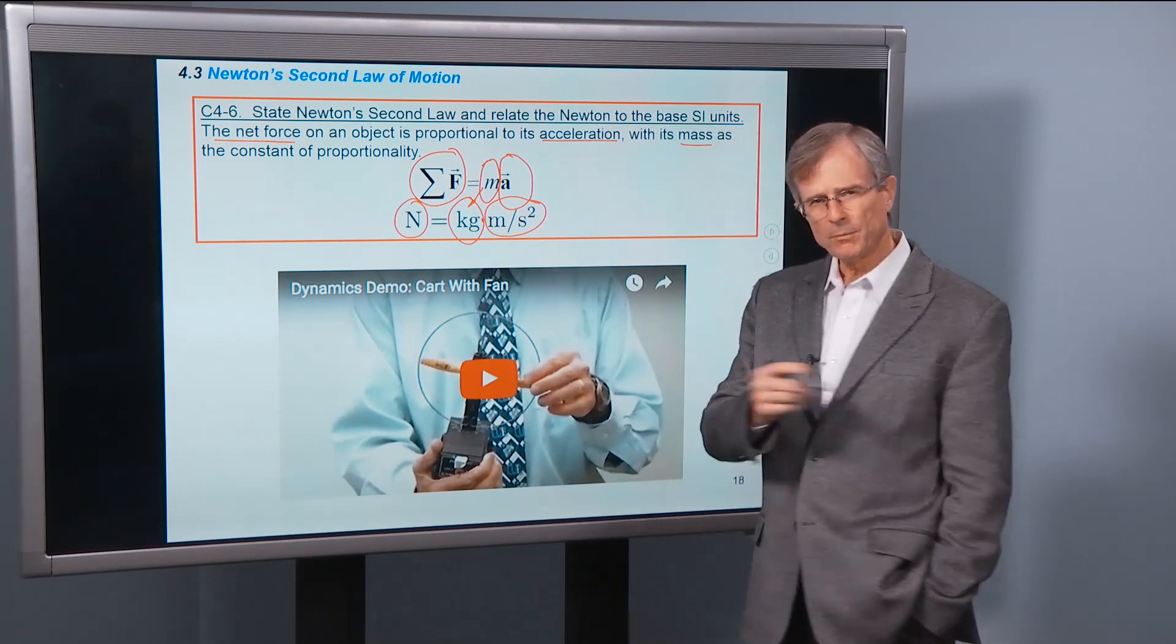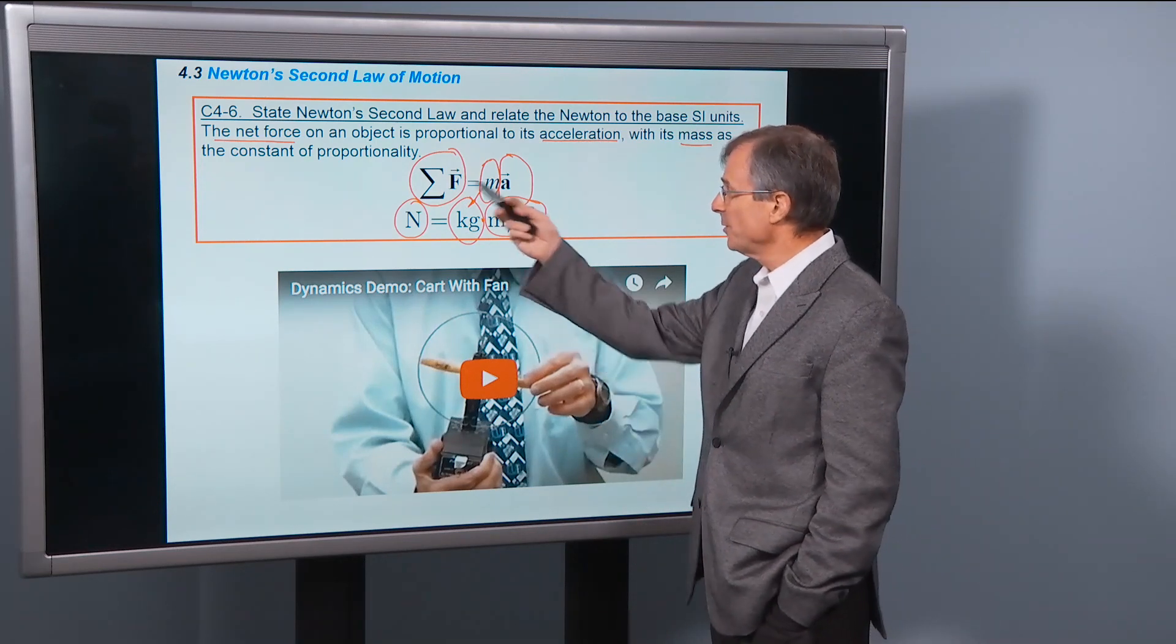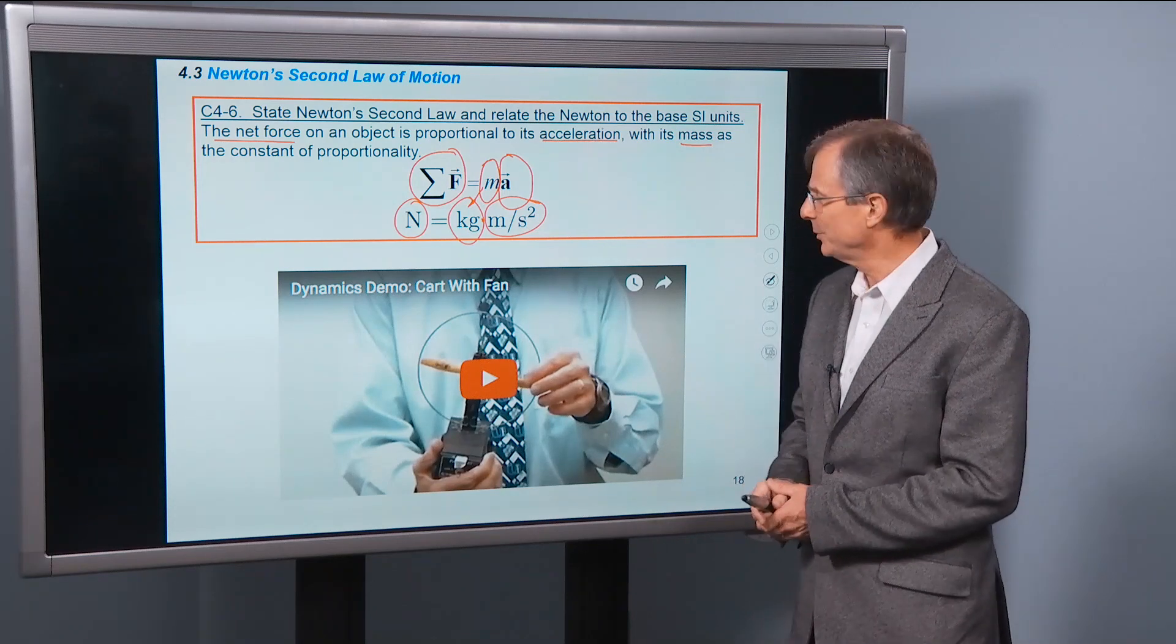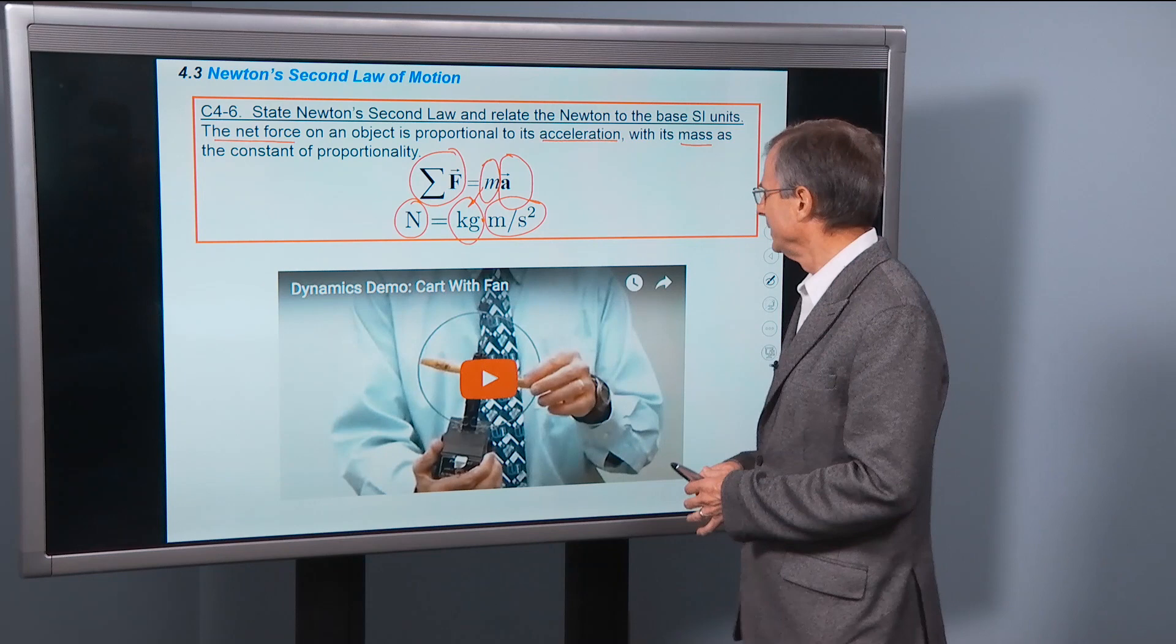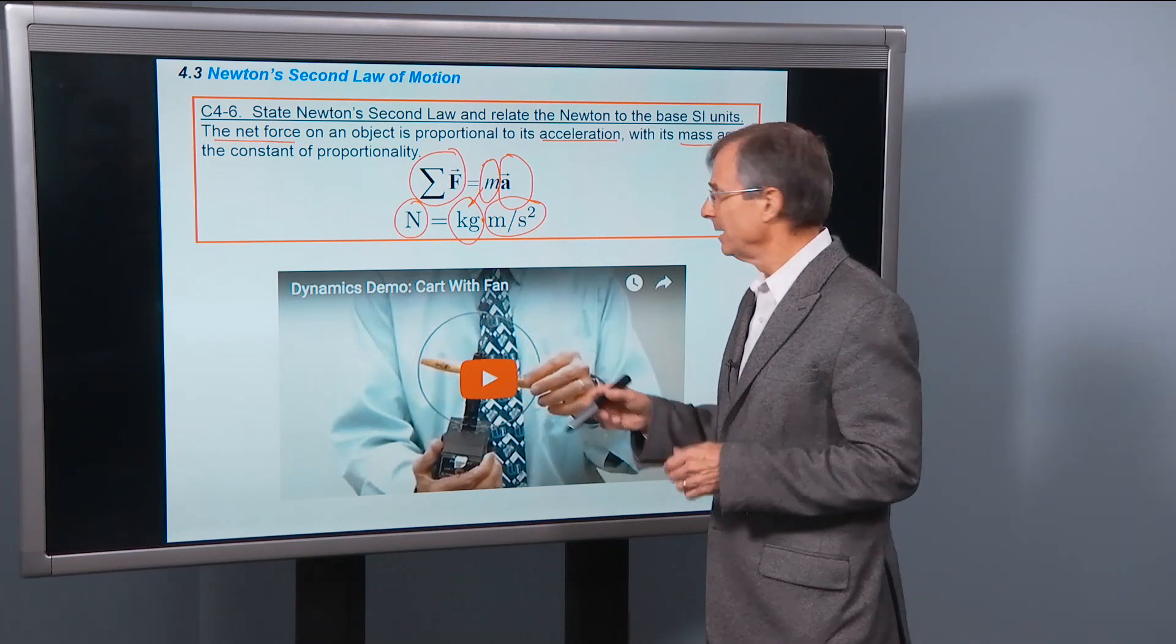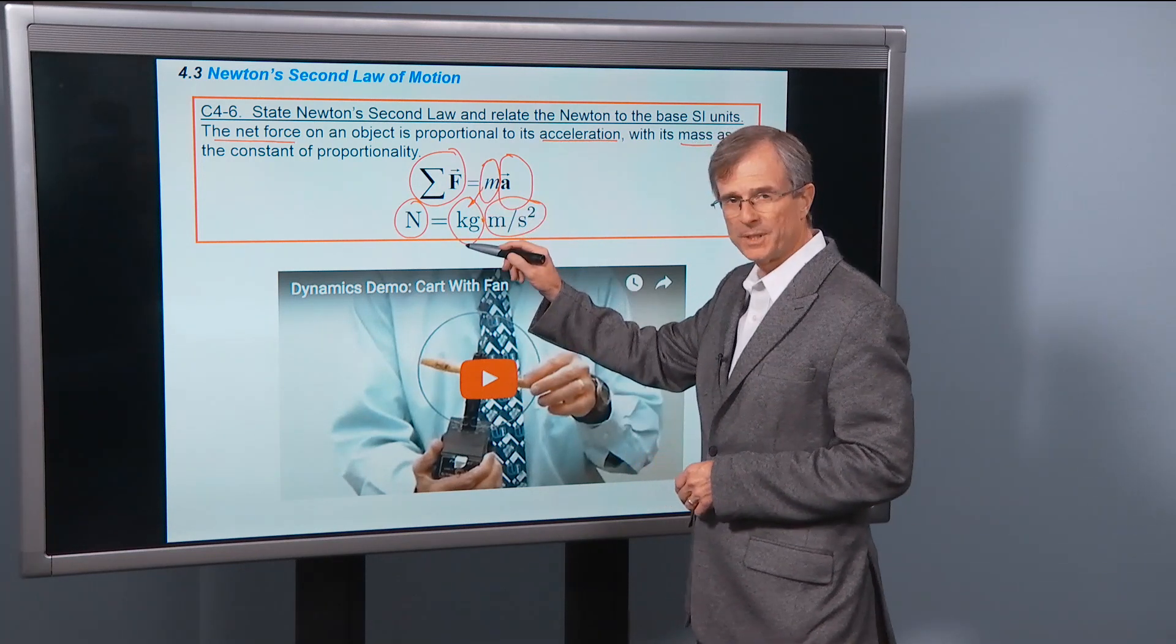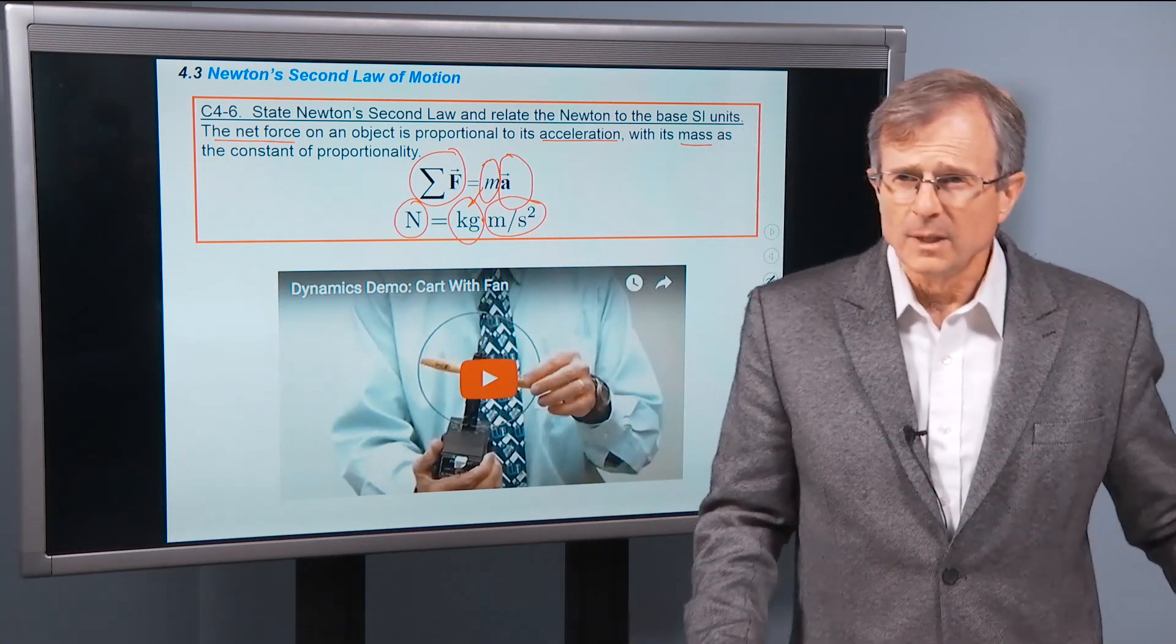And if you forget what a newton is, in fact I would hardly memorize this, you can always get this from F equals MA, which you'll remember now, hopefully, until you're teaching your grandkids and have gray hairs. So newton is a kilogram meter per second squared. How can you remember it if you forget it? Well, you can remember F equals MA, F is measured in Newtons, mass is measured in kilograms, acceleration measured in meters per second squared. All right, a video.